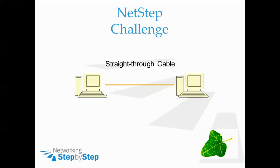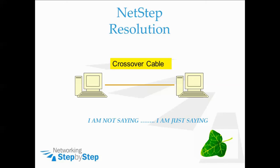It is now time to see what you've learned with the NetStep challenge. Assuming everything is IP'd correctly, will these devices be able to ping each other? No — a crossover cable should have been used in place of the straight-through cable. You can't go from device to like device with a straight-through cable. Like to like: crossover. Like to unlike: straight-through.